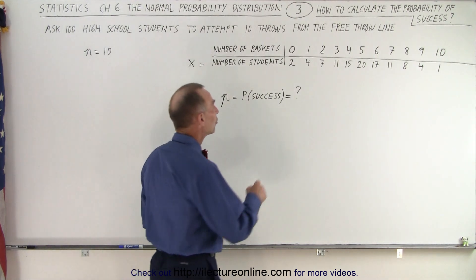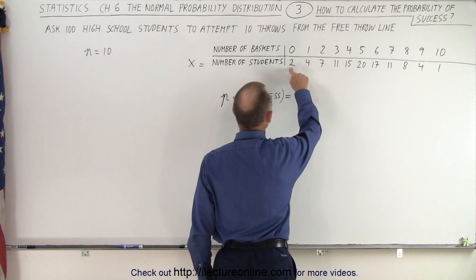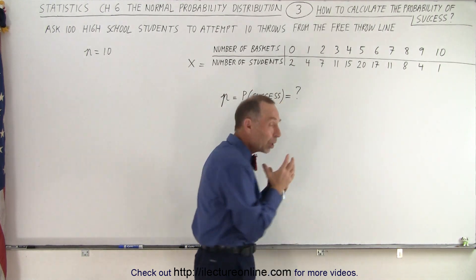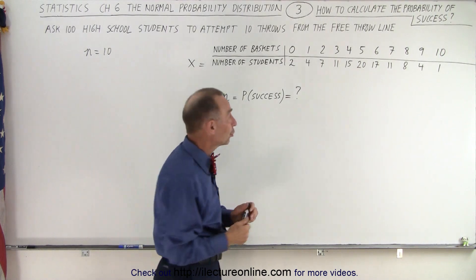So the way to calculate that is to multiply the number of students times the number of baskets made in each case, add them all up and then divide by the total number of students.